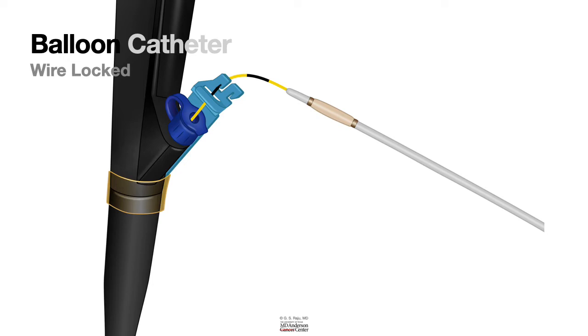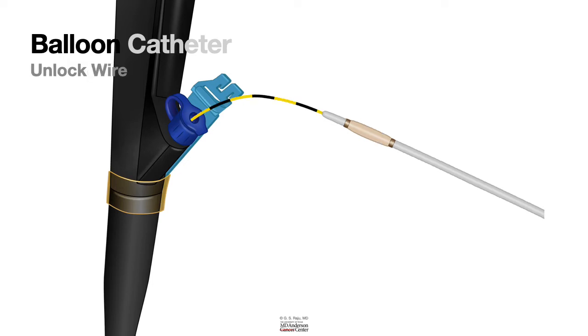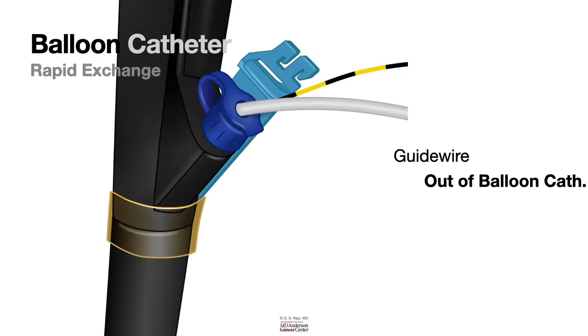After a short exchange, the guide wire is out of the balloon catheter. This is a short exchange unlike a long exchange with a standard balloon catheter.